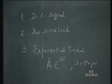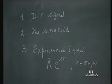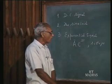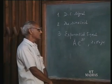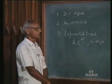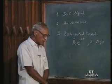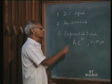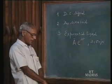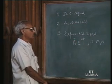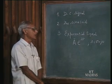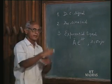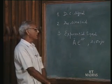We term this quantity s the complex frequency, simply for the reason that it has the dimensions of one over time — something per second. Something per second is called frequency, and since this is generally complex, we call it a complex frequency. We should not read more meaning into that; we should not interpret this as indicating a repetitive or periodic phenomena.